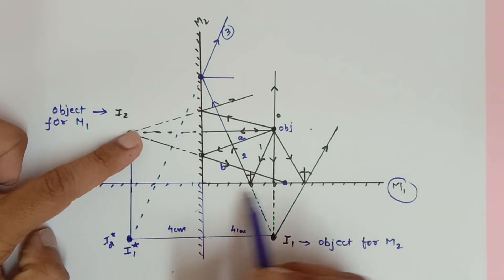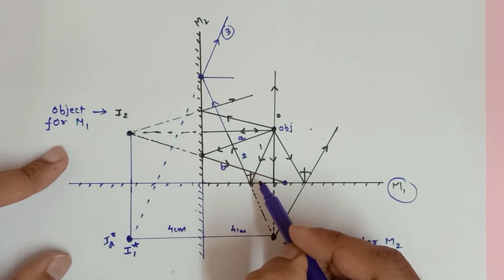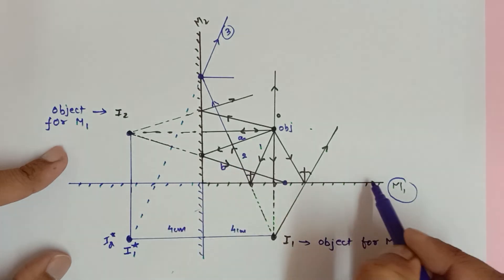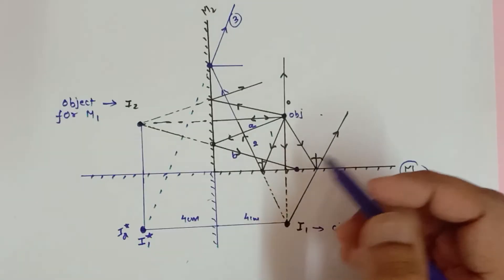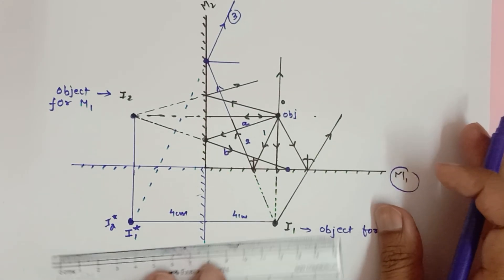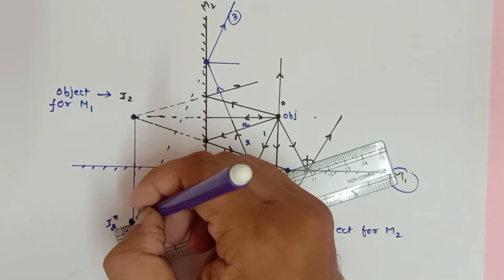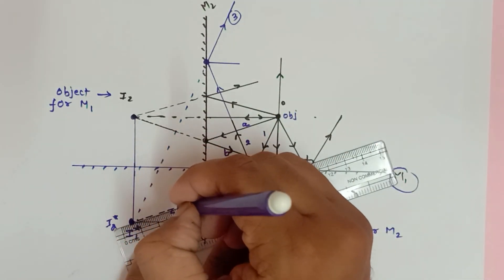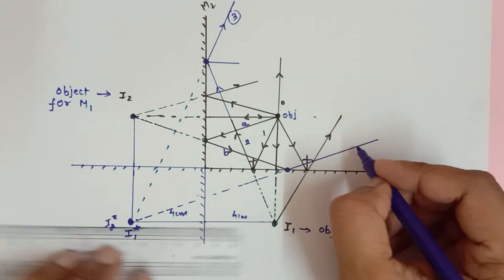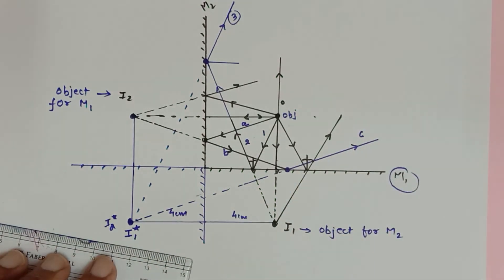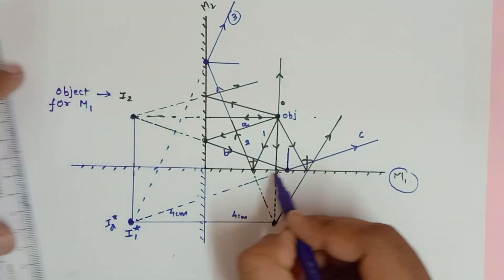For mirror M1, this is the incident ray which appears to be coming from I2, so I2 is the object. I2-star is the image formed. The reflected ray C connects these two points — I should combine these two points to find the reflected ray C.